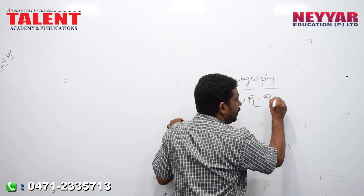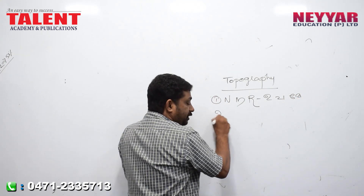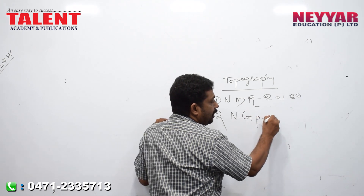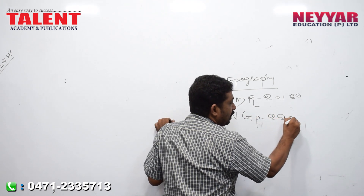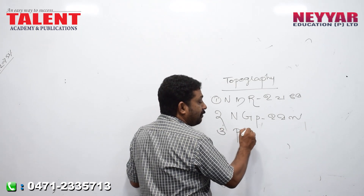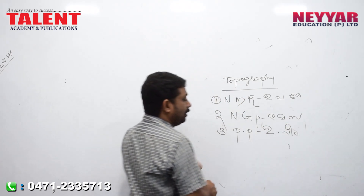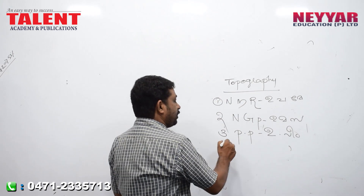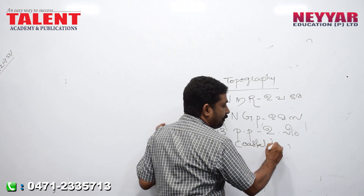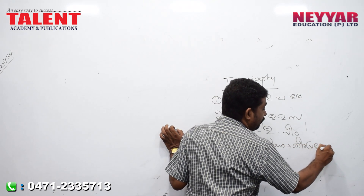In Malayalam: uttada parvada magala (Northern Mountain Ranges). Second landform: Northern Great Plain — in Malayalam: uttada maha samadalam. Third landform: Peninsular Plateau (Peninsular Plate). Fourth landform: Coastal Plain — in Malayalam: teedap pradesham.